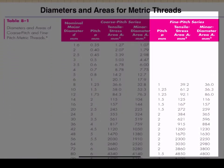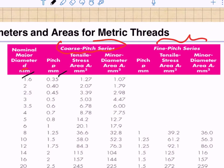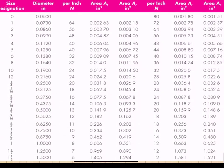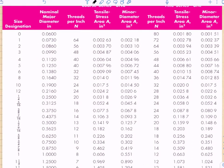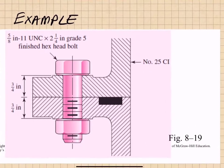Table 8.1 covers metric threads, divided into coarse pitch and fine pitch series, listing nominal diameters, pitch, and threaded cross-sectional areas. Table 8.2 covers the English system, listing major diameters, number of threads per inch, and tensile stress area for both coarse and fine series. Now let's do an example.